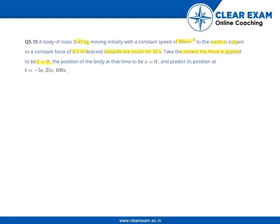The position of the body at that time is to be x = 0, and predict its position at t = -5 s, 25 s, and 100 s.